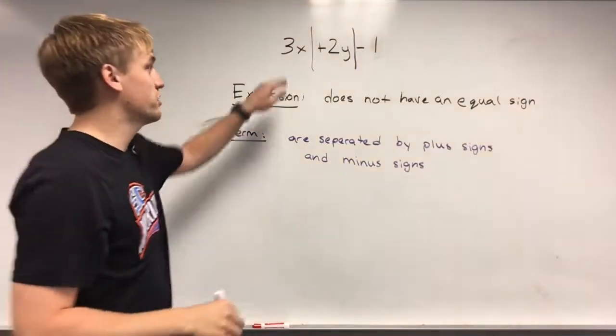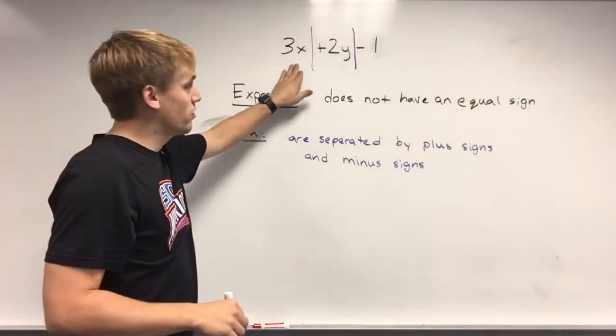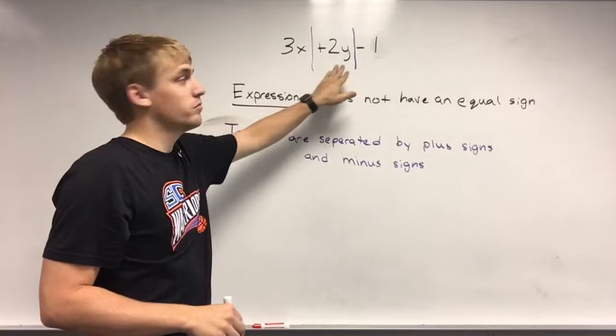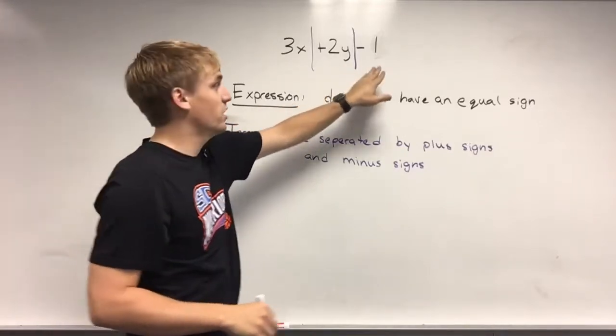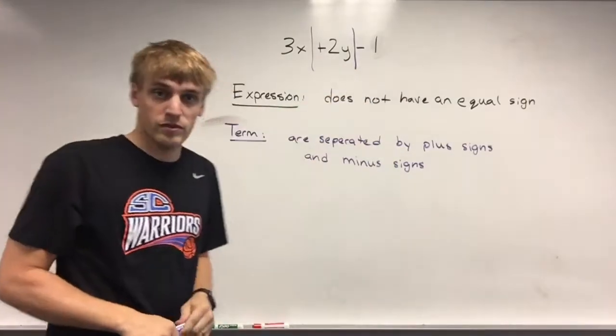So this expression here has three terms. 3x is the first term, positive 2y is the second, and negative 1 is the third term.